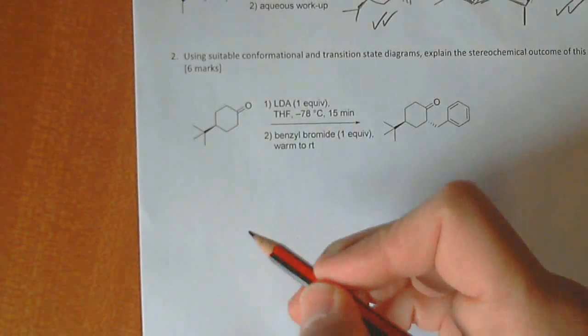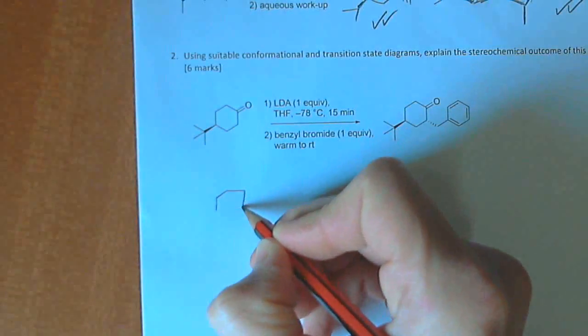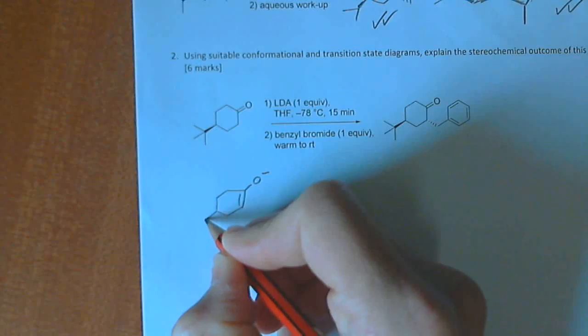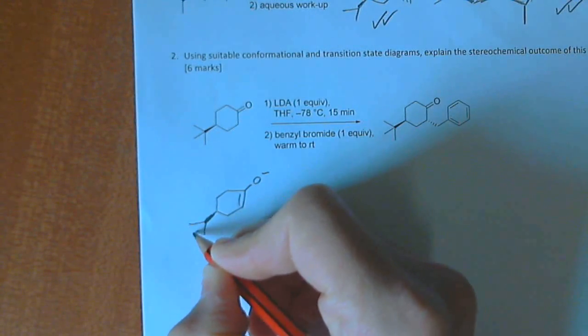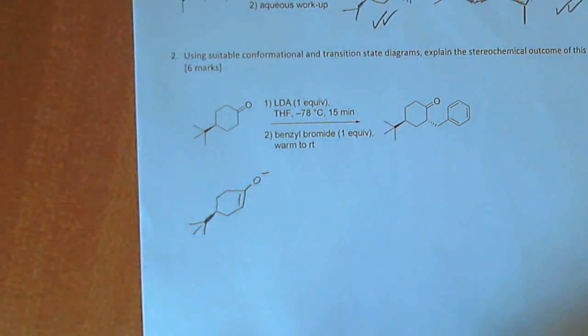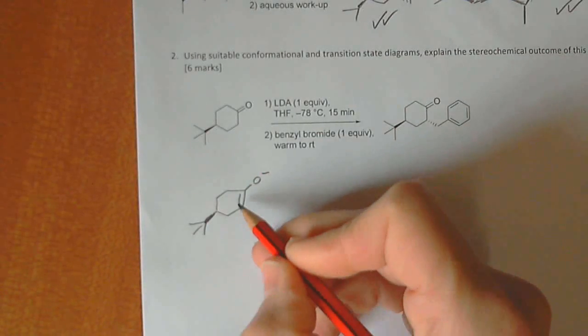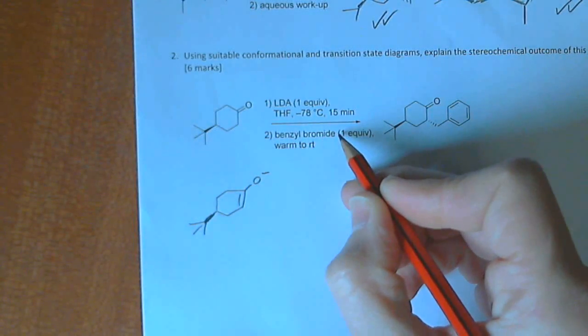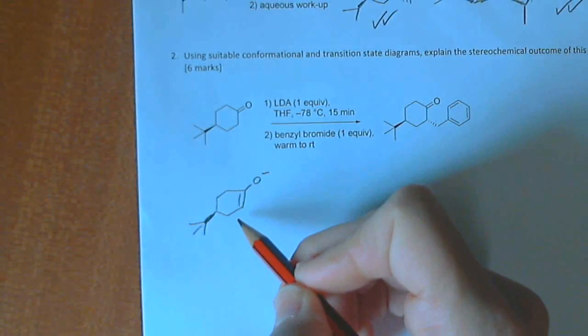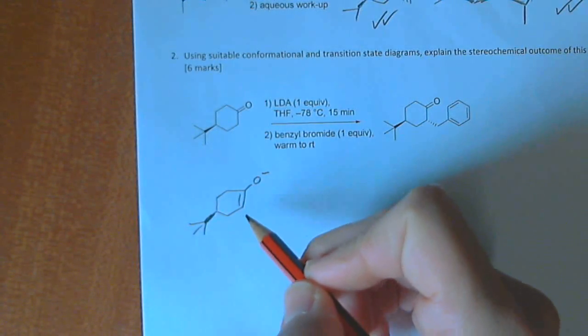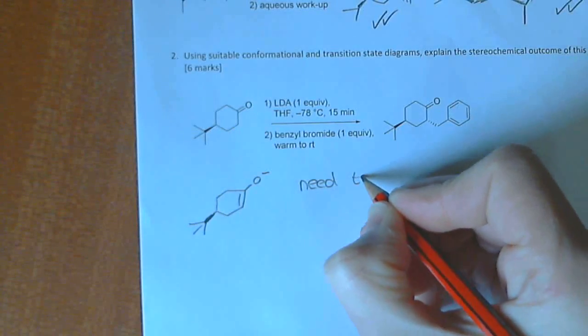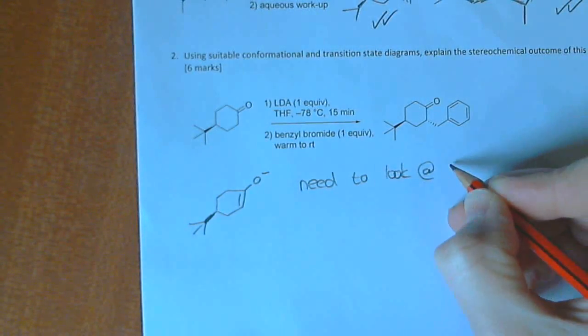So the first point is obviously to recognize that in the reaction itself, we are forming the enolate, which looks like this. It could have formed on the other side as well. It's not too important about that, but anyway, I've just drawn it like this. And in order to understand where the electrophile comes in, which is benzyl bromide, we need to look at the half chair.